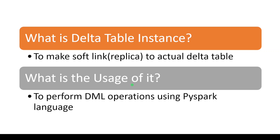So a Delta table instance is nothing but a soft link to the actual table. But we already have a table name to refer to the table — so why do we need a table instance? What is the usage of it?